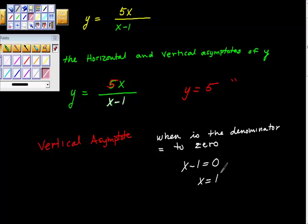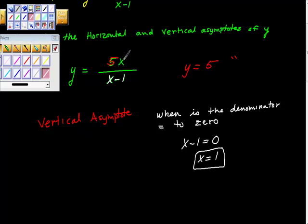The only caveat to that is this. The only caveat to that is to make sure, this is crucial, to make sure that this value doesn't make the numerator and the denominator equal to 0. If it does, we have something called the indeterminate form, and it means that this is factorable and that we have a removable discontinuity. So we have to check that in this case. So 5 times 1 is equal to 5, and 1 minus 1 is equal to 0. So this is not an indeterminate form.